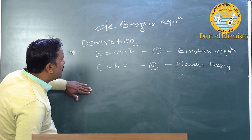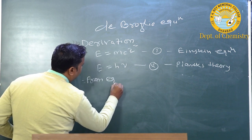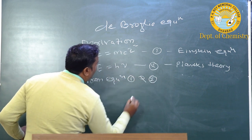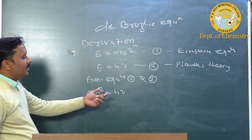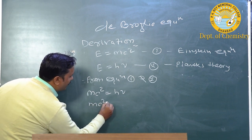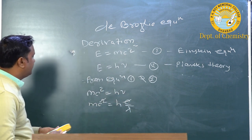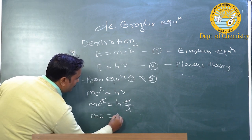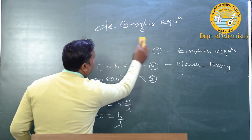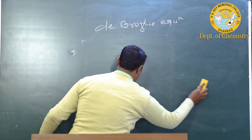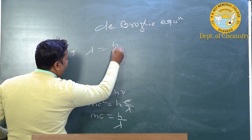From equation 1 and 2, we get mc² = hν. We also know that ν = c/λ, so mc² = hc/λ. Cancelling c from both sides, we get mc = h/λ, or λ = h/mc.